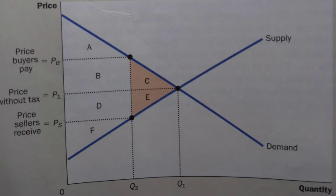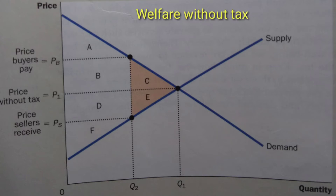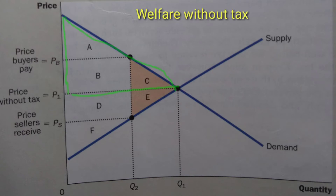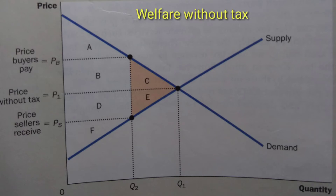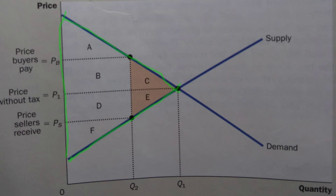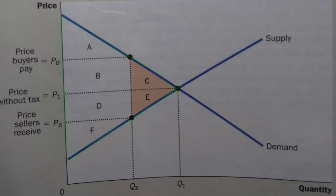To see how a tax affects welfare, we begin by considering welfare before the government has imposed a tax. The figure shows the supply and demand diagram and marks the key areas with the letters A through F. Without a tax, the price and quantity are found at the intersection of the supply and demand curves — the price is P1 and the quantity sold is Q1. Consumer surplus is the area between the demand curve and the price: A plus B plus C. Producer surplus is the area between the supply curve and the price: D plus E plus F. Because there is no tax, tax revenue equals zero. Total surplus equals A plus B plus C plus D plus E plus F — the area between the supply and demand curves up to the equilibrium quantity.